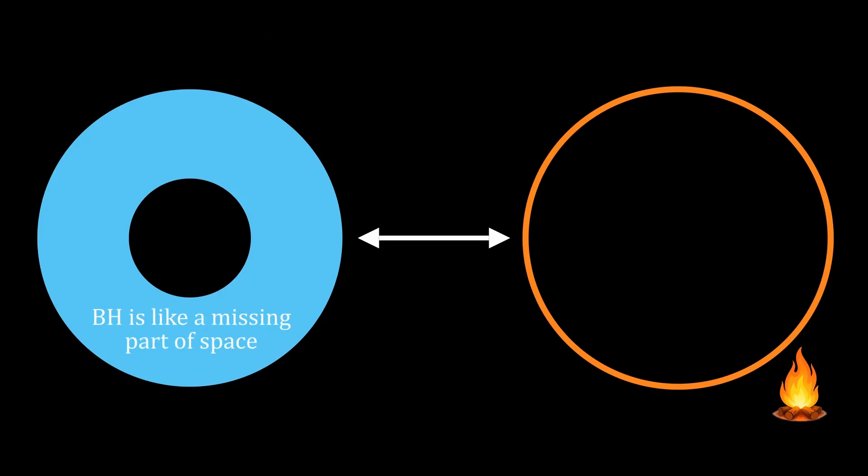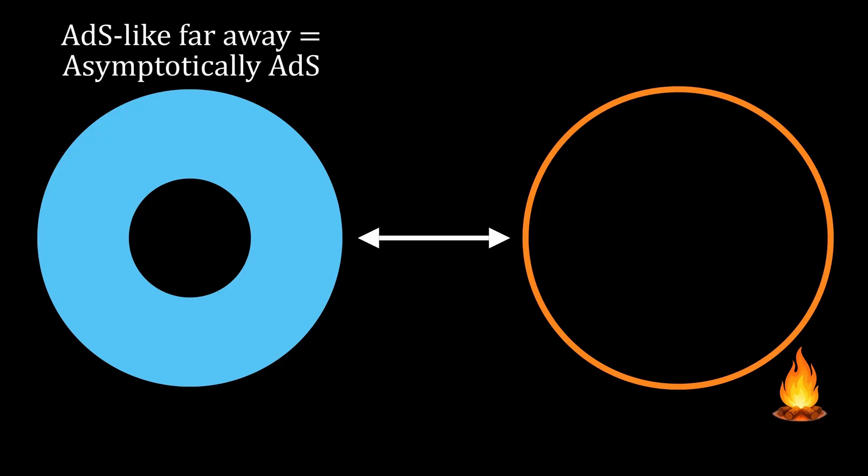This geometry looks like the ADS spacetime out near the boundary, but it is strongly modified deep inside. This second entry highlights a key feature of holographic duality. While the vacuum of the CFT is dual to empty ADS, other states of the CFT are in general dual to a big class of spacetimes which are all ADS-like as you approach the boundary. The technical statement is that these spacetimes are asymptotically ADS.